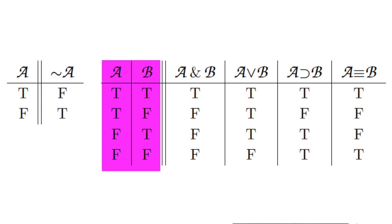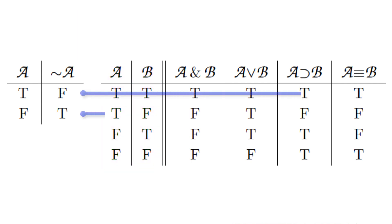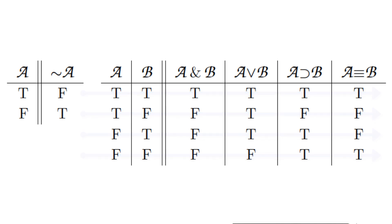The columns to the left of the double line in these tables are called reference columns. They specify the truth values of the individual variables, with each row of the table assigning a different set of truth values to the variables. The full table supplies every possible combination of truth values for the sentence. The truth table for any sentence containing only one connective can be found by looking at the characteristic truth table for that connective. So the truth table for P ampersand Q looks just like the characteristic truth table for conjunction found in our master table, but with the variables P and Q forming a substitution instance for the metavariables A and B.